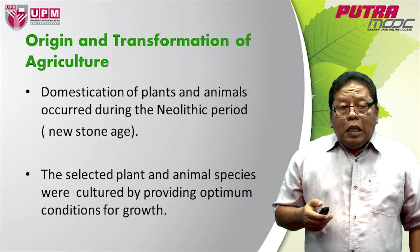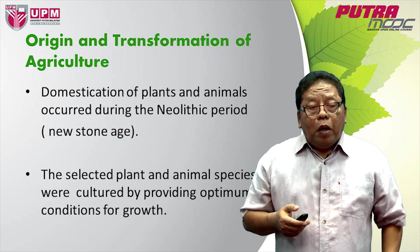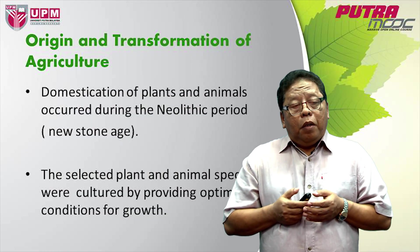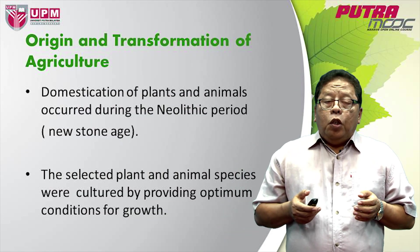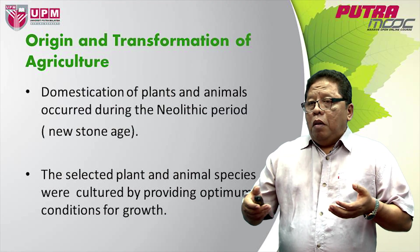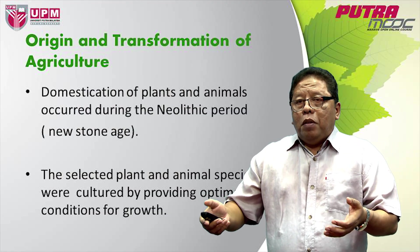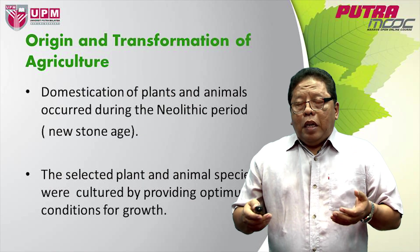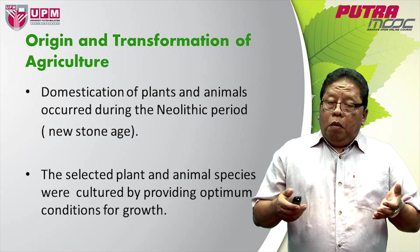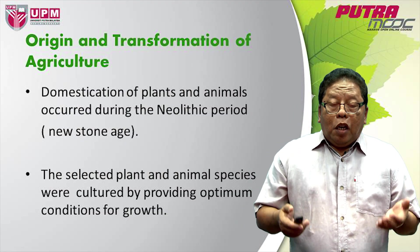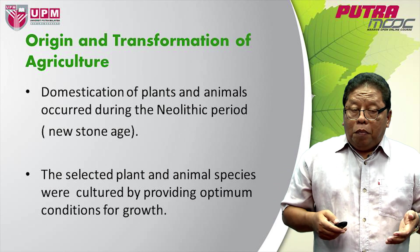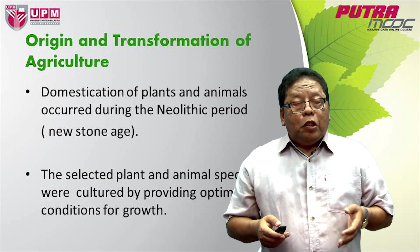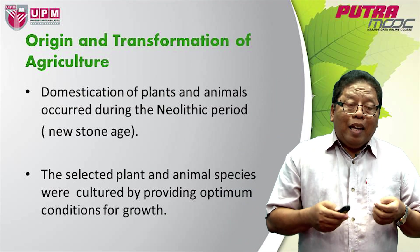Later on, they have what we call domestication of plants and animals. This occurred during the Neolithic period, during the New Stone Age. People collect plants, select the plants, select animals, and bring them close to their home and provide these plants and animals with optimum conditions so that they can grow and later be harvested. The selected plant and animal species were captured by providing optimum conditions for growth. This is how agriculture started.